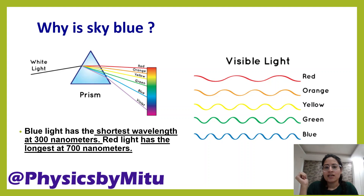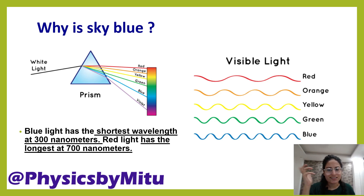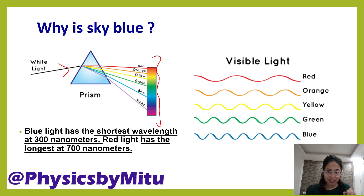Why is the sky blue? The answer lies in how sunlight reaches the earth. Sunlight appears white, but it has seven colors in it. When white light passes through a prism, it splits into seven colors.